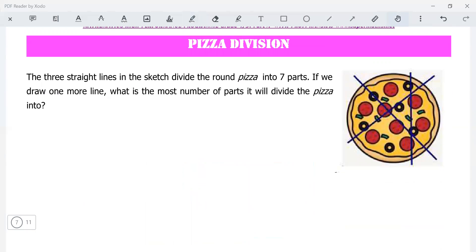Three straight lines in the sketch divide the round pizza into seven parts. So here's a pizza there: one, two, and three, right? What is the most number of parts if we draw the fourth line, one more line? What is the most number of parts it will divide the pizza? Think about it now carefully. How should you draw this?